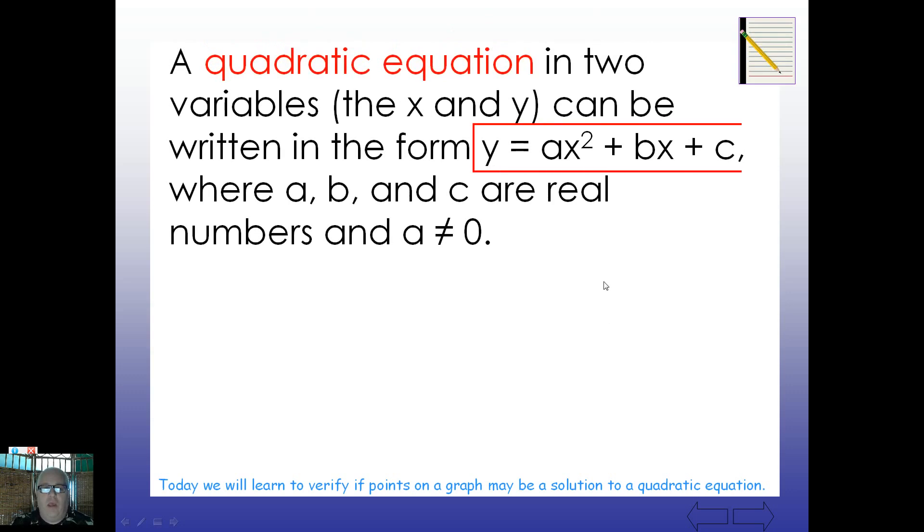A quadratic equation in two variables, the x and y, can be written in this form. Notice that the thing up here asks you to write this down. Y equals ax squared plus bx plus c. So for example this would be a typical example. Y equals 4x squared plus 3x plus 2. And I want you to notice this relationship here which we'll see today or tomorrow.